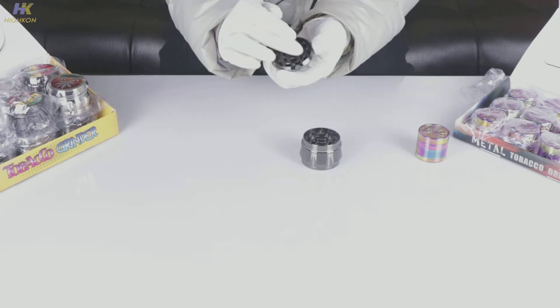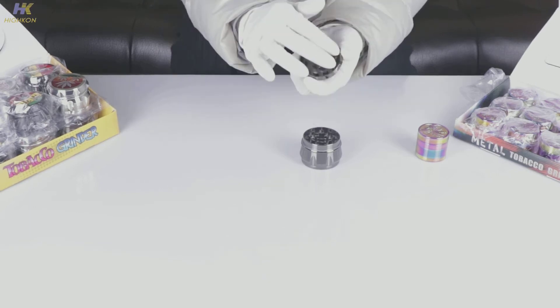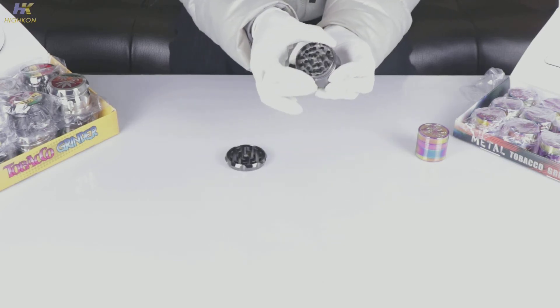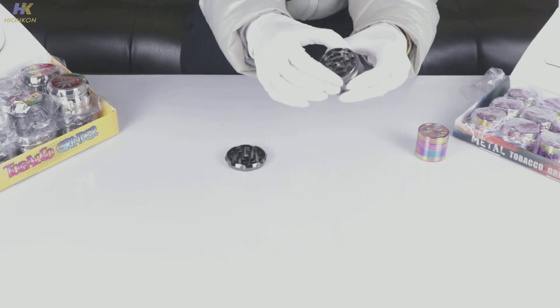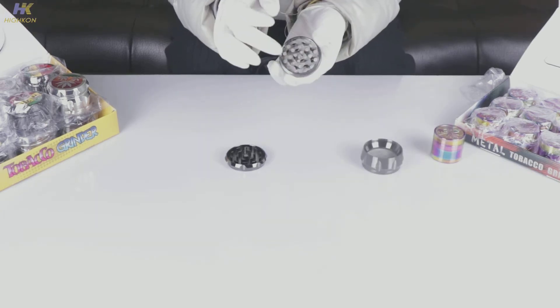Let's pull it off and you can see on the cover there is a neodymium magnet in the middle with very sharp teeth. Also some sharp teeth at the second layer. On the second layer, you can see some holes where the ground herbs get through.